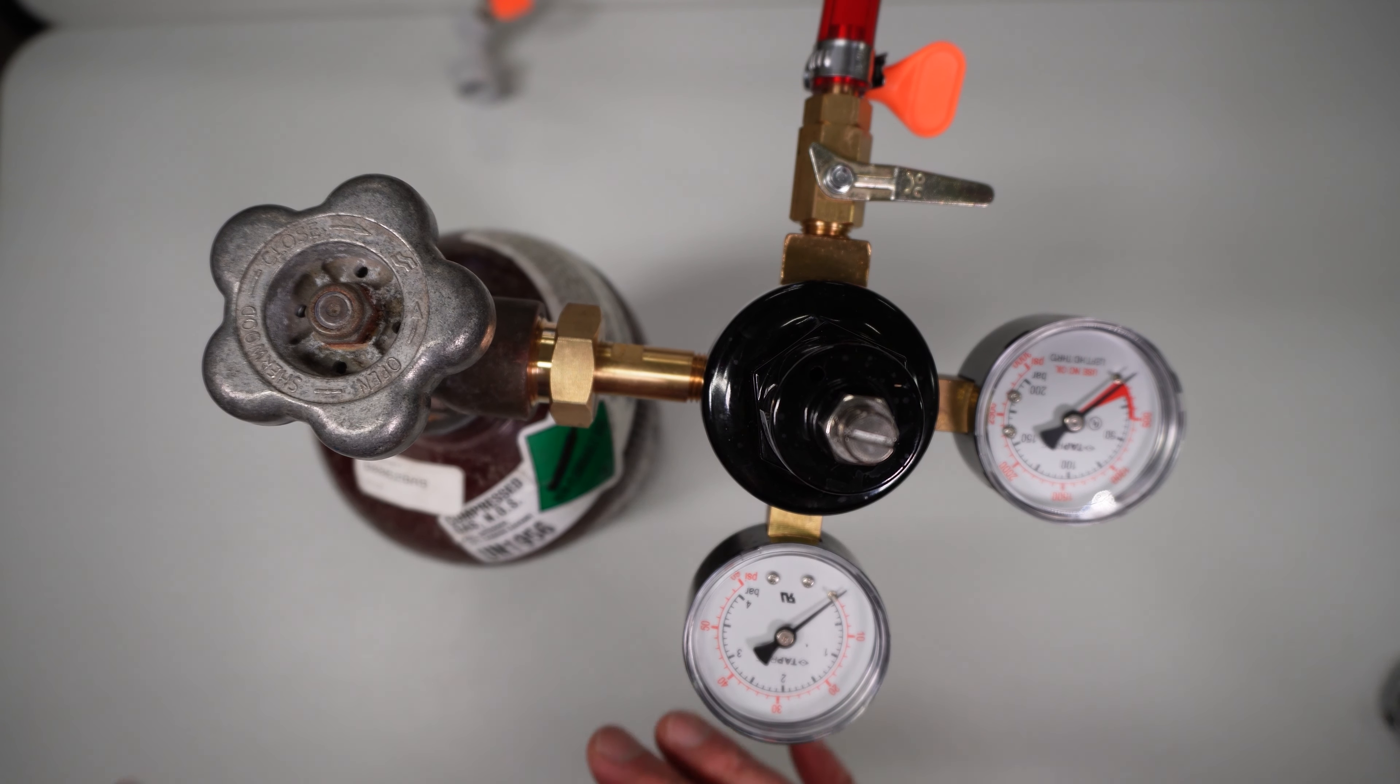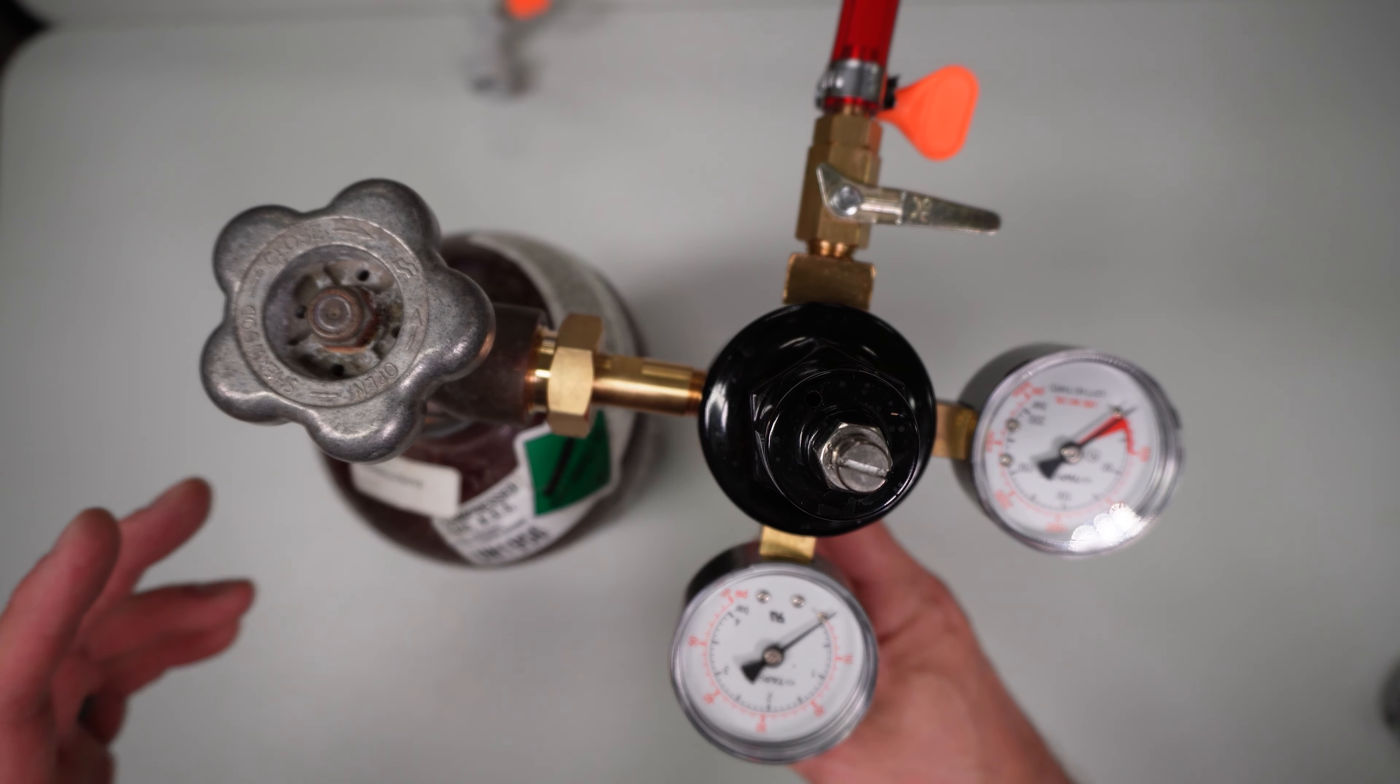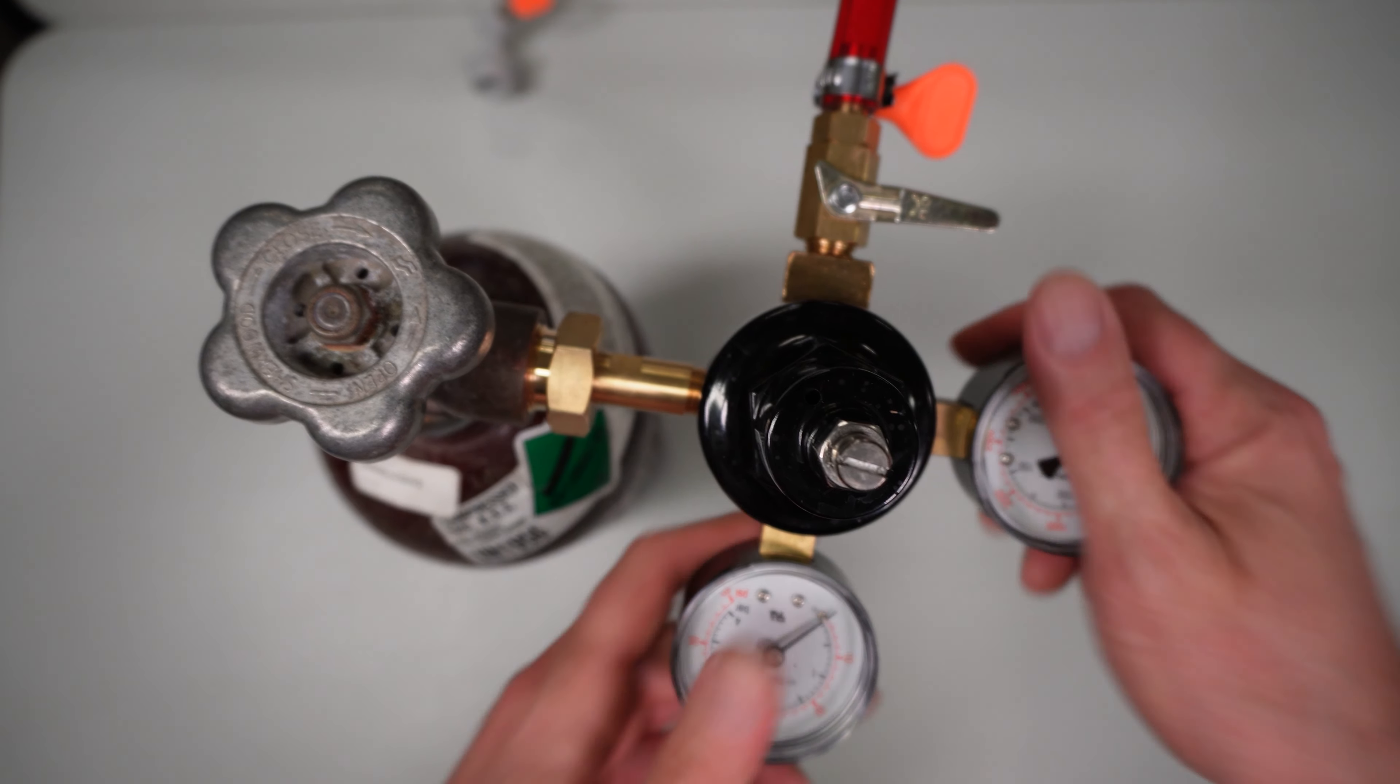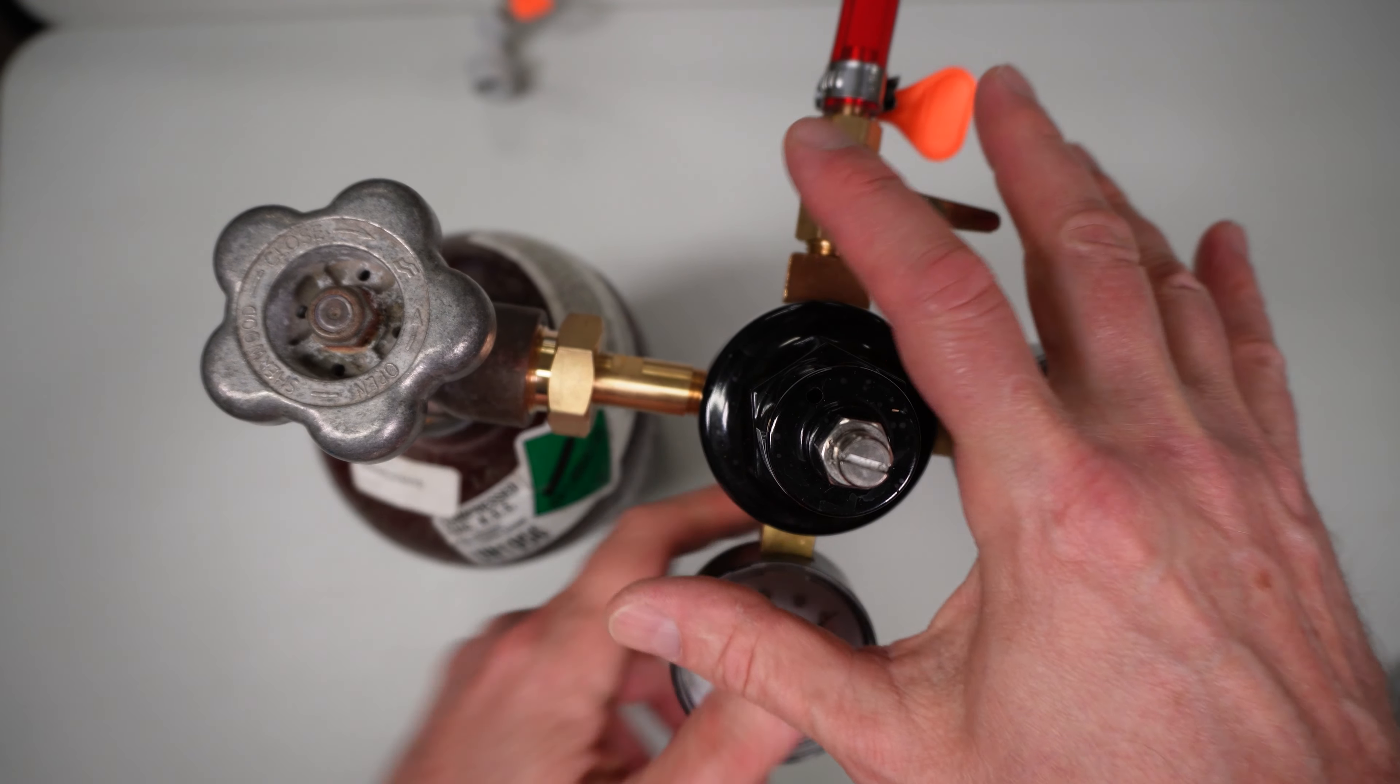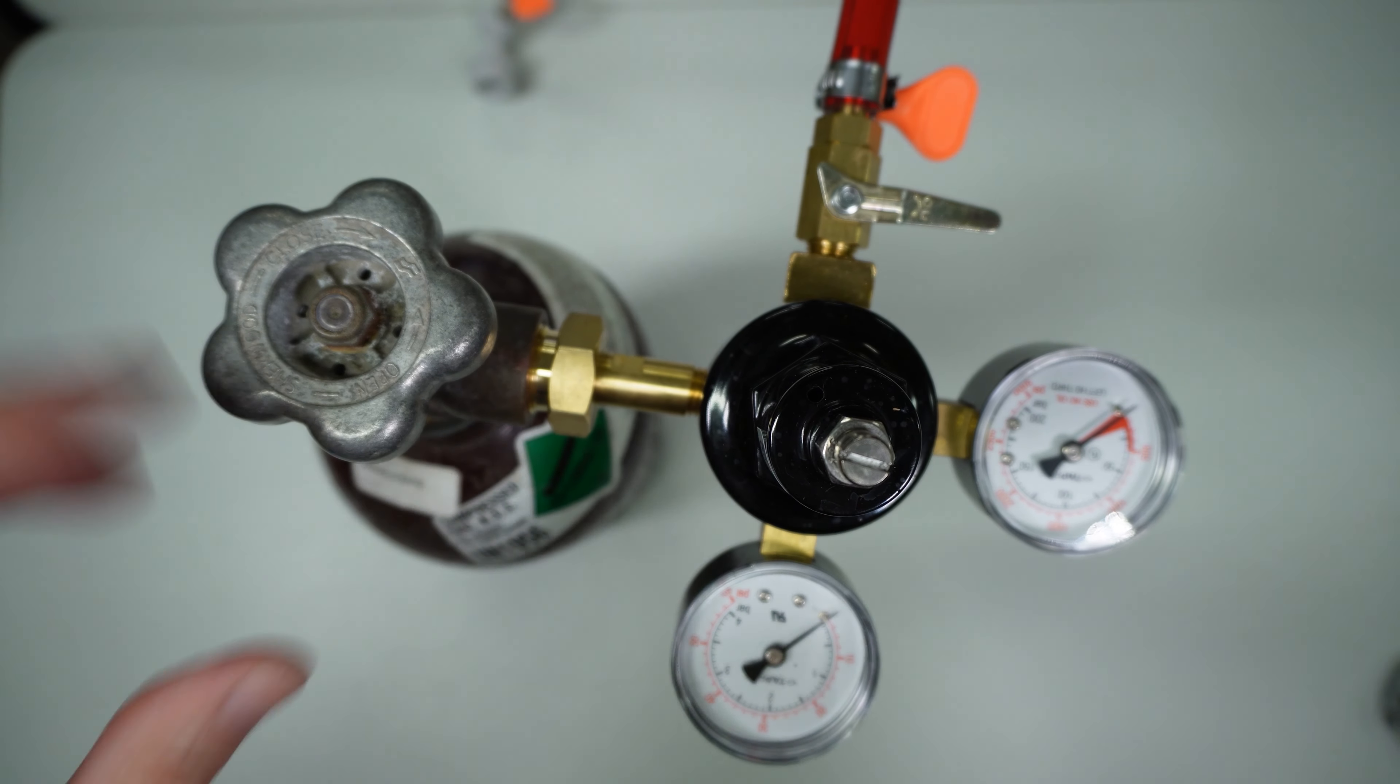What we have here is a beer gas cylinder. This is nitrogen and carbon dioxide, 25-75 mix. This is a dedicated regulator for nitrogen. You could use it also on argon. It has the same interface.